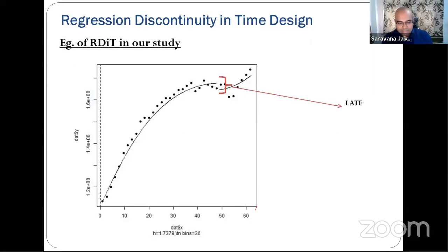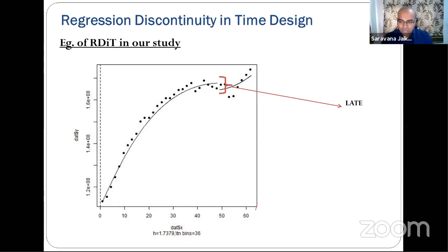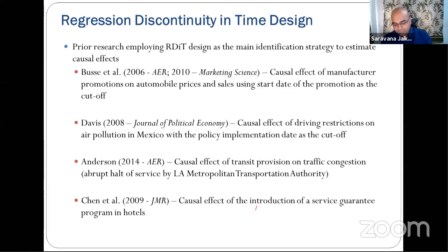We illustrate an example RD-IT result with a second-order polynomial time trend showing a clear discontinuity between pre- and post-regulation fitted lines for one SKU. We applied this analysis to each of the 179 SKUs, identified the optimal bandwidth for each, and calculated the local average treatment effect (LATE). Prior research in AER, Marketing Science, JPE, and JMR has used RD-IT, though usually for a single company and event; our application is systematic across 179 SKUs.